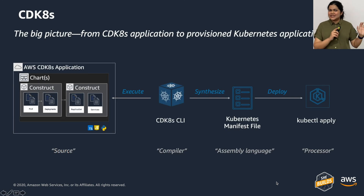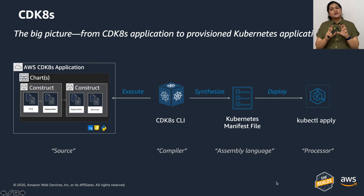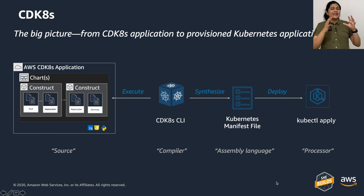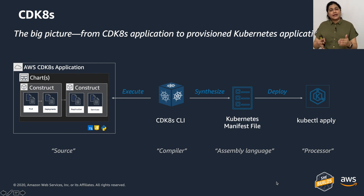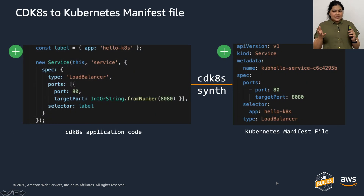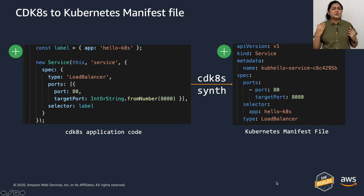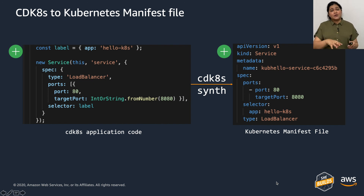With CDK8s, similar to CDK, you have a CDK8s application. Instead of creating stacks, you define charts, and each chart contains constructs — not AWS resources, but Kubernetes resources like pods, services, and deployments. You use the CDK8s CLI to initialize and then synthesize into a Kubernetes manifest file, which you then give to kubectl to deploy resources in your Kubernetes environment. For example, you can define a label once and reuse it anywhere in your application, avoiding typos and human errors — applying the same programming language principles to your Kubernetes manifests.